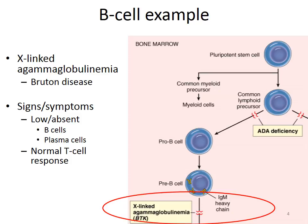In Bruton disease, patients have either low or completely absent B cells — the pre-B cells never differentiate into mature B cells. They do make the heavy chain but not the light chain. They have low or absent B cell and plasma cell populations, and underdeveloped lymph nodes and Peyer's patches found in the intestine. However, they do have a normal T cell response, because T cell development is on the other side of this mechanistic tree.